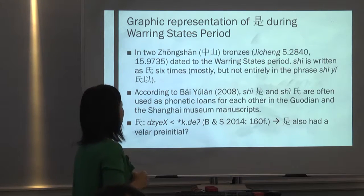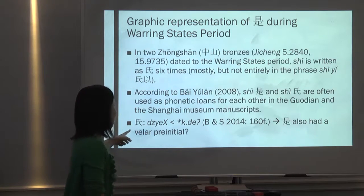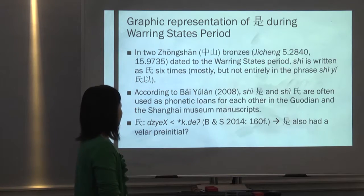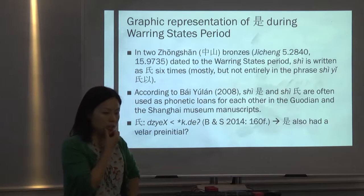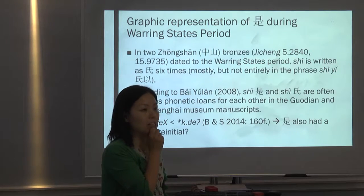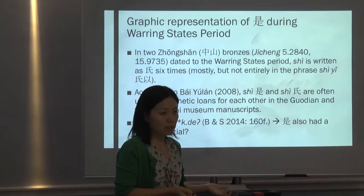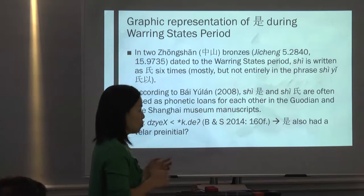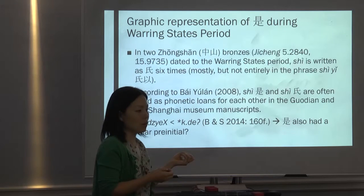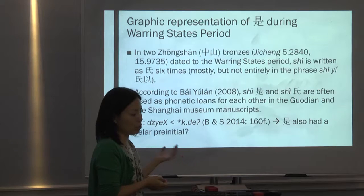According to the reconstruction in Baxter and Sagart's new book, this shi should be reconstructed as k-something. So it poses the question: has palatalization taken place in at least some words during the Warring States period, or did the initial of the clan shi still retain this K-type pre-initial during that time?